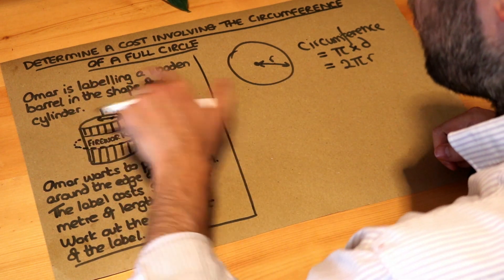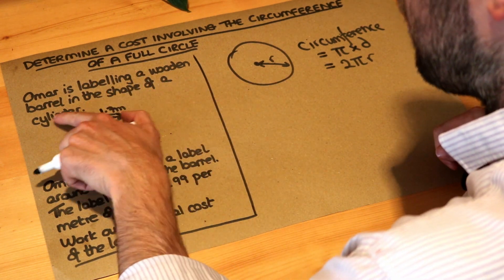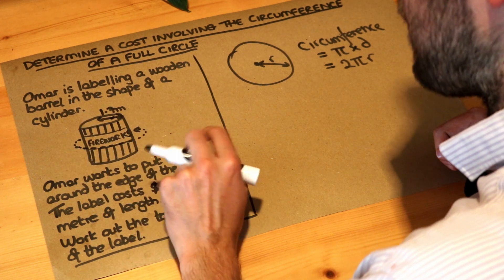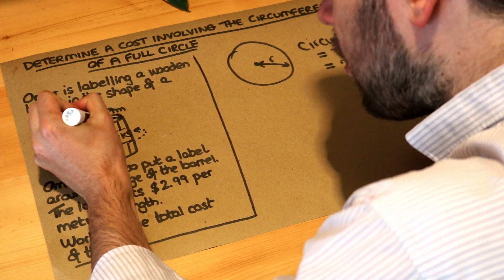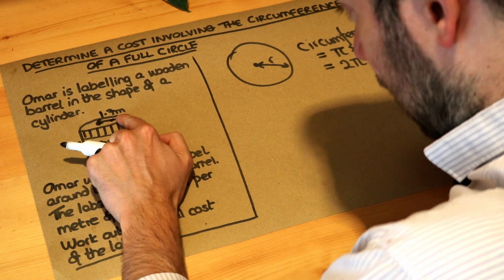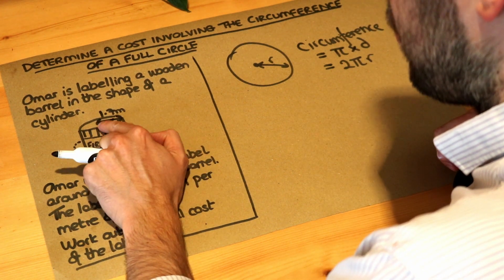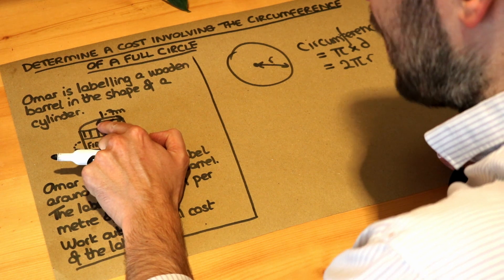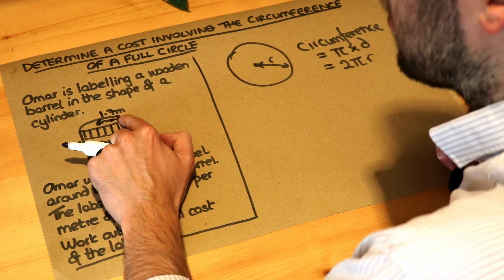Let's read the question. Omar's labelling a wooden barrel in the shape of a cylinder. So you've got your cylinder here and the radius of the circular top of the cylinder, of this barrel, is 1.7 metres. Remember the radius is the line from the centre of the circle to the edge, the circumference of the circle.